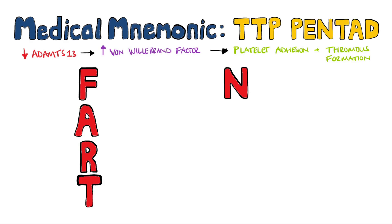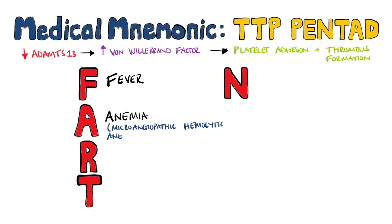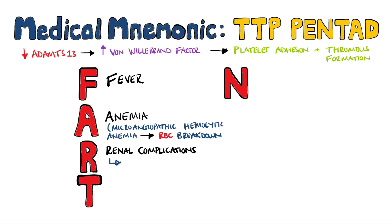So first off, we have F to represent fever, and A to represent anemia, which is present due to the increased breakdown of red blood cells seen in TTP. R is to remind you of the renal complications, such as acute kidney injury, that can happen in TTP.